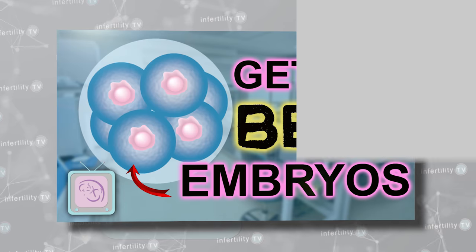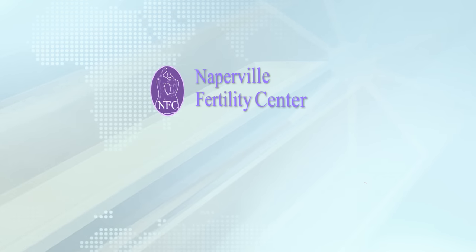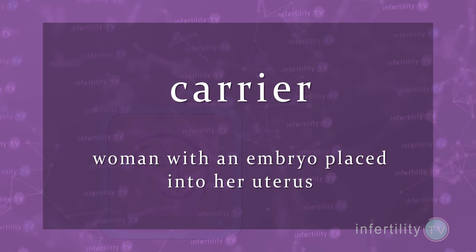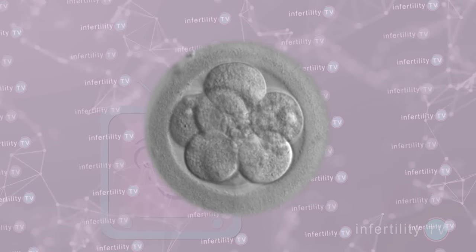This is part 2 of our series on why IVF cycles fail after transfer. Check out this playlist for part 1 and other helpful videos. There are two categories of IVF failure: problems with the embryo and problems with the carrier. On today's episode of InfertilityTV, we will talk about problems with the carrier. A carrier is any woman that has an embryo placed into her uterus — the embryo could be from her own egg or another woman's egg. For today's discussion, we are going to assume that the embryo is perfect and normal. An IVF cycle can fail after transfer because of multiple problems with both the embryo and the carrier.